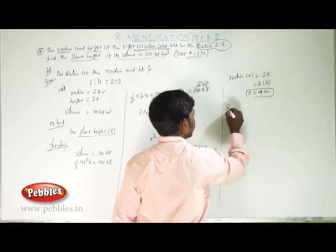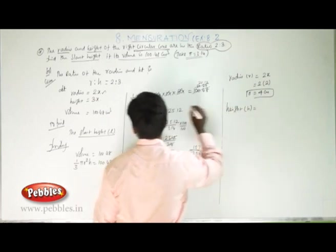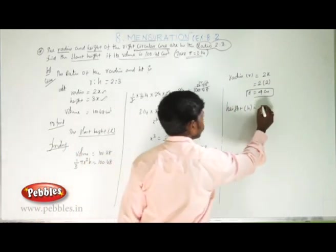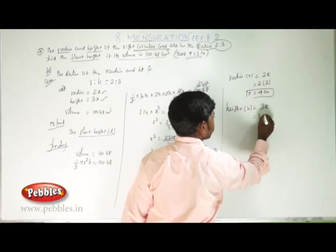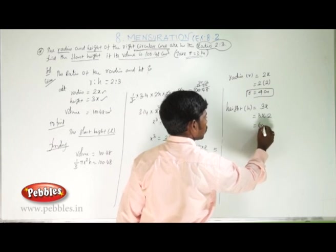And height h = 3x = 3 × 2 = 6 centimeter.